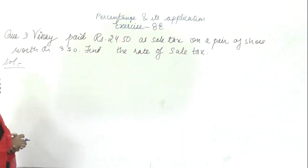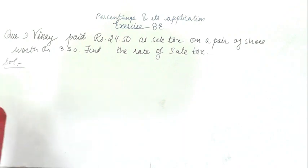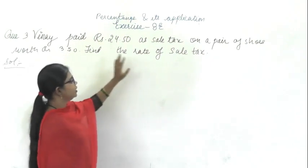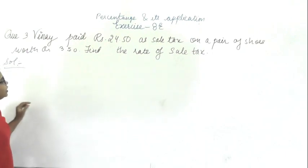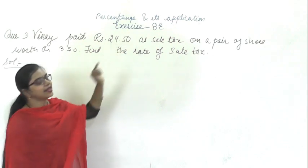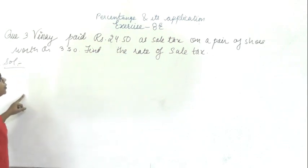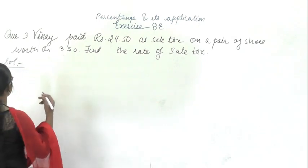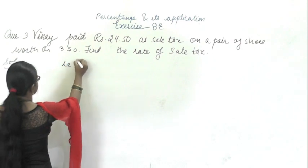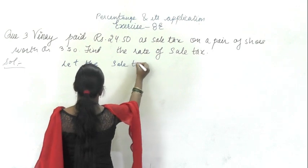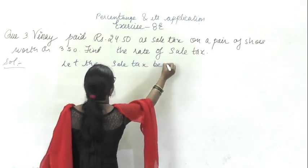This is question number 3. It says: when Vinay has paid rupees 24.50 as sale tax on a pair of shoes worth rupees 350, find the rate of sale tax. So let the rate of sale tax be R.